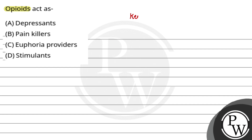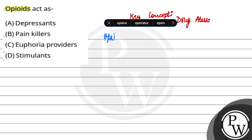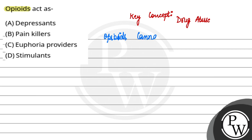The key concept used in this question is information about drug abuse. We talk about different types of drugs, their abuse, and their functions. What are the different types of drugs in our body? There are opioids, some kind of cannabinoids that we get from plants, some kind of cocaine, and some kind of barbiturates. There are many platforms available in our market.